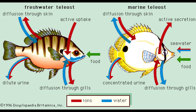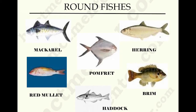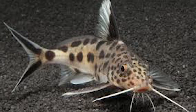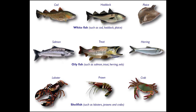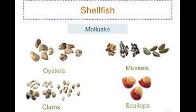Round fish swim vertically — examples include bass, catfish, and grouper. Flat fish swim horizontally — examples include flounder and halibut. Now we'll learn about shellfish.